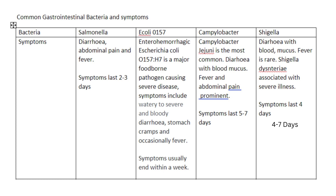The second bacteria is Enterohemorrhagic Escherichia coli 0157 H7. This organism tends to cause severe disease. Symptoms may include watery to severe bloody diarrhea, stomach cramps, and occasionally fever. Symptoms may last within a week, but can take up to two weeks in some cases.